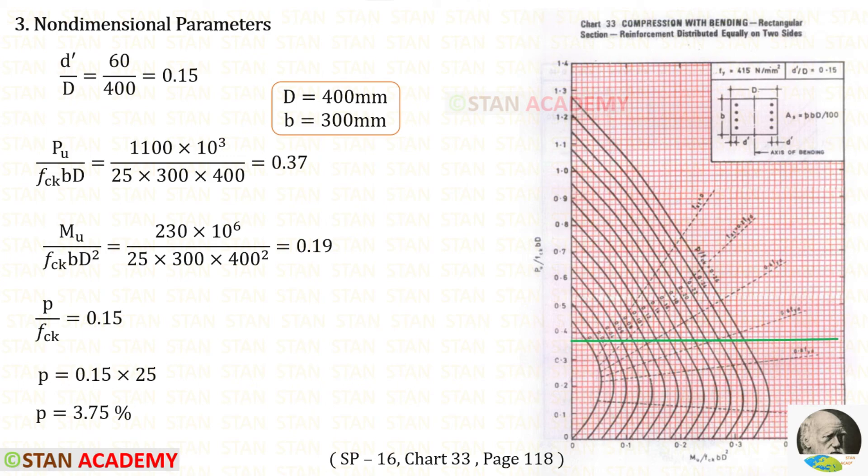For Mu upon Fck BD square, we have got 0.19. This is 0.2 and this is 0.19. Along 0.19, we have to make a line. This point comes between the curves 0.14 and 0.16. So let us keep p upon Fck as 0.15, since it is between 0.14 and 0.16.